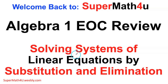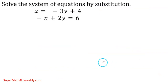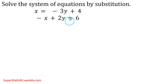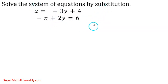Hi guys, welcome back to Super Math for You. This is Misty Regal. Today we're reviewing the Algebra 1 EOC — solving systems of equations by substitution and elimination. Our first problem: solve the system. I have a system because I have two equations. When you have two or more equations it's called a system. By substitution — what are the steps?